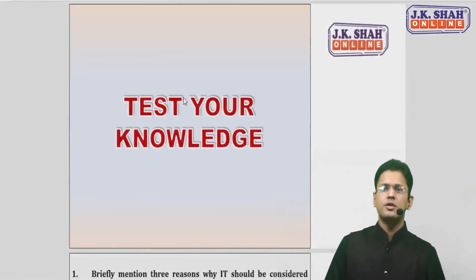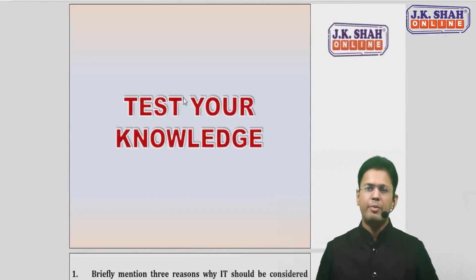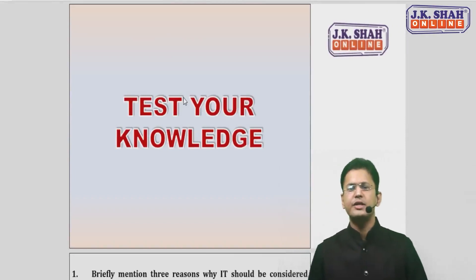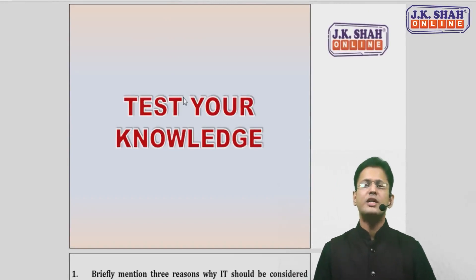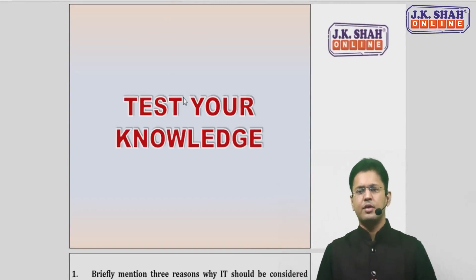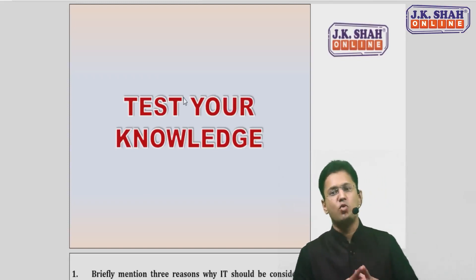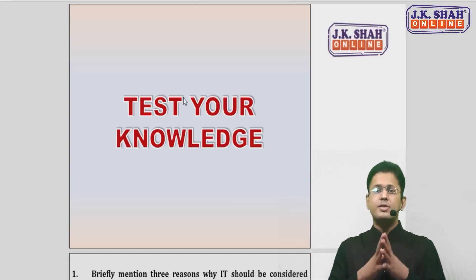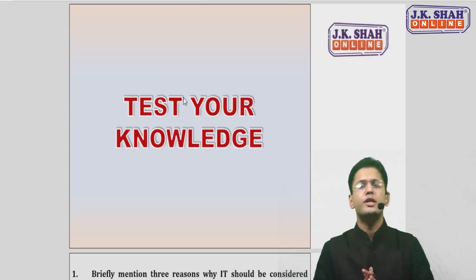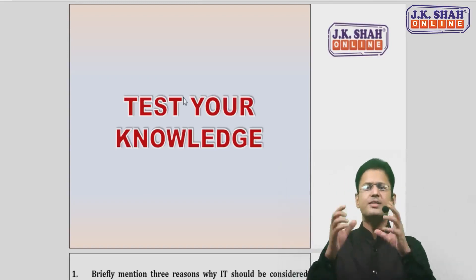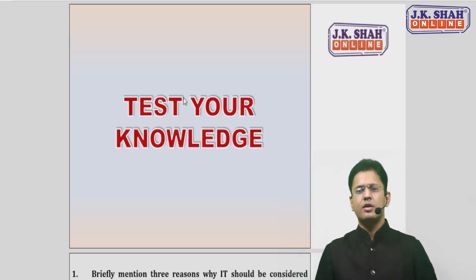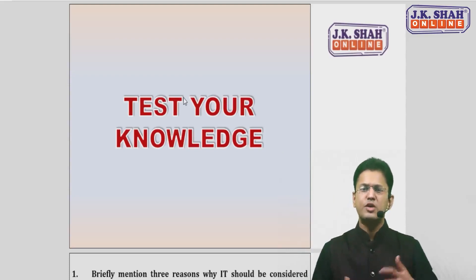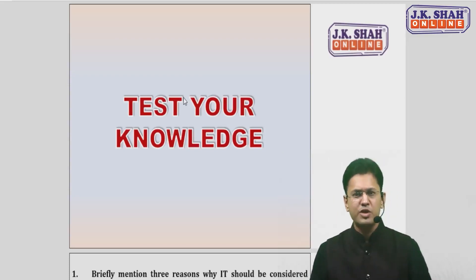Hello and welcome to JKC Online Platform. Today we will be covering Chapter 6 revision lecture for CA Inter Auditing and Assurance, Paper Number 6. Chapter 6 is 'Audit in an Automated Environment.' This chapter covers how an auditor is going to audit in an automated environment. It is a very small chapter similar to Chapter 5, having few questions. We will begin with the module questions first.